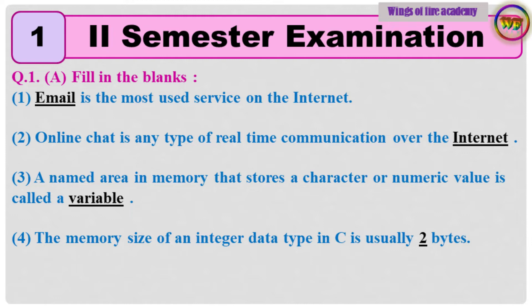3. A named area in memory that stores a character or numeric value is called a variable. 4. The memory size of an integer data type in C is usually 2 bytes.